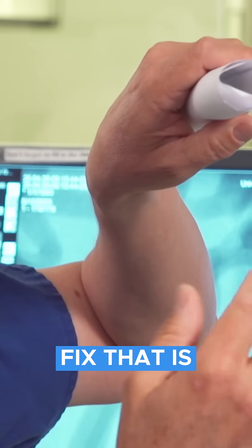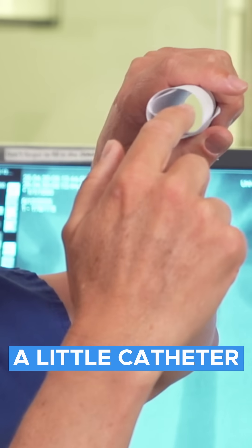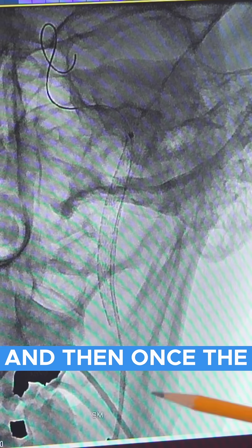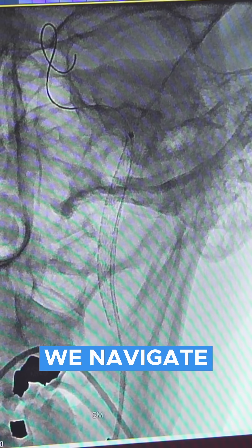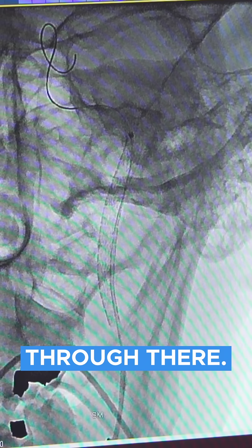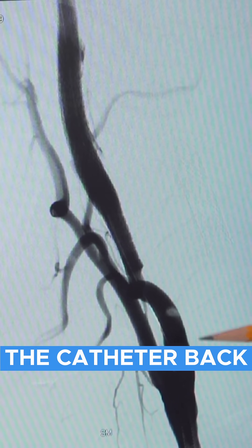And the way we fix that is actually to take a little catheter and squeeze our way into the remaining lumen and then once the catheter, the little wire, we navigate through that using screens and x-ray and we navigate through there and then we pull the catheter back.